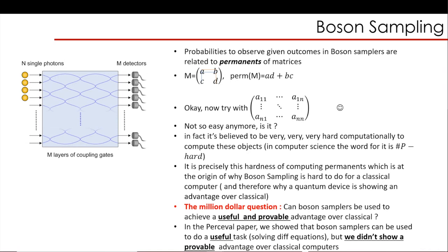Of course, boson sampling does a specific task, which is sampling - I'm just asking what is the probability of getting this configuration. But is this a useful task? This is like the million dollar question. Can you use boson samplers and whatever statistics you get to get a useful and provable quantum advantage over a classical computer? Quantum advantage means for a specific task, a quantum device is outperforming your classical device. In our Percival paper, we showed that you can use a boson sampler to do a useful task - differential equation solving - but we did not show that it has a provable advantage yet. This is something we're currently researching.